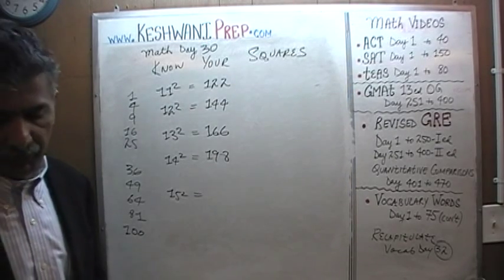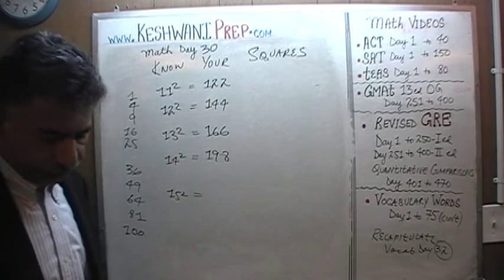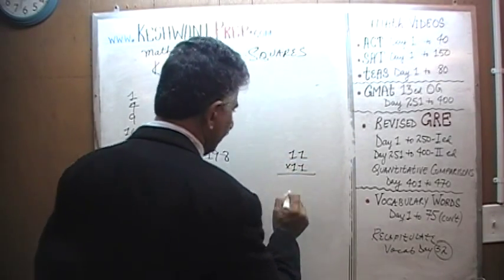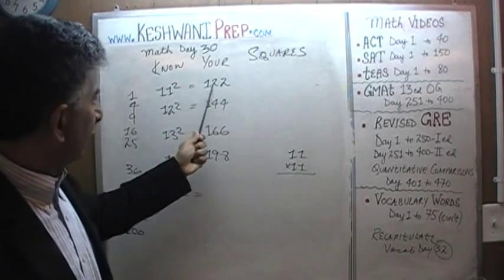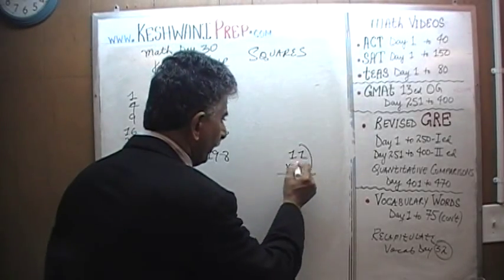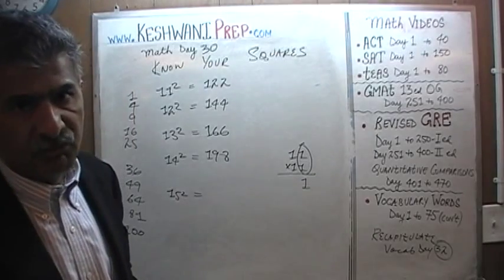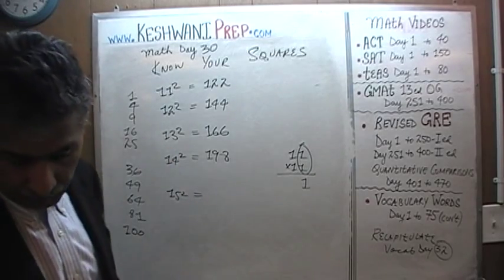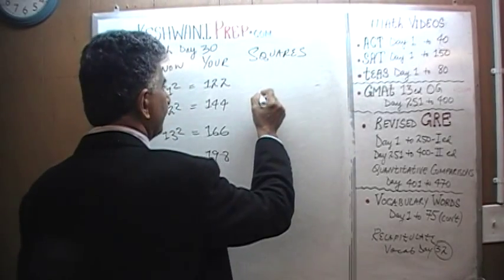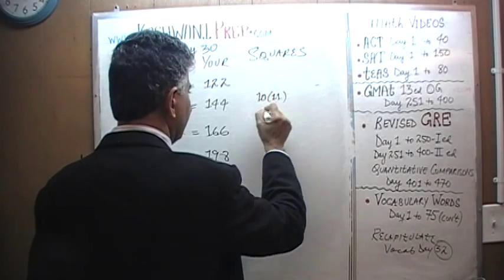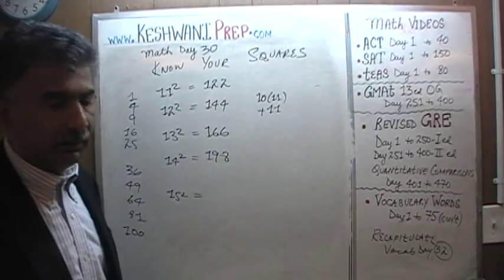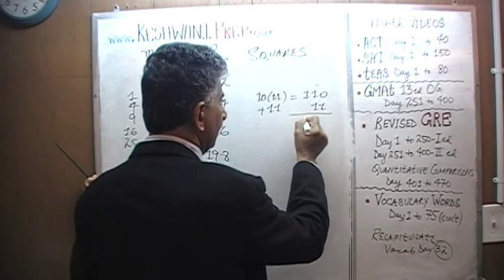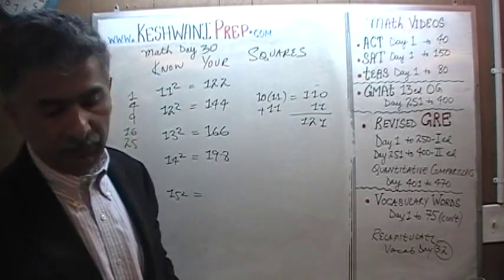Let's find out what is going on here. 11 squared — if we were to multiply 11 by 11, the unit digit has to be 1 times 1, which is 1. It cannot be 122. We want 11 elevens: that's 10 elevens plus 1 more eleven. 10 elevens is 110, plus 11 more gives us 121. It turns out it is not 122 — it is in fact 121.